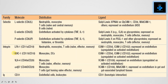We also have integrins: LFA-1, Mac-1, VLA-4, and alpha-4 beta-7. Among these, LFA-1 and VLA-4 are important. LFA-1 is expressed by neutrophils and the other three by monocytes. They interact with ICAM and VCAM. Then we have CD31, which helps in transmigration. Diapedesis is the process of leukocytes piercing the endothelial wall and moving towards the site of injury.